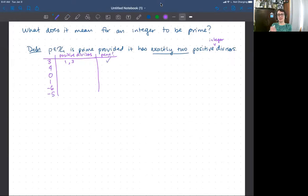What about four? The positive divisors of four are one and four, but also we can sneak in two between there. So you get two. And is that exactly two positive divisors? Nope. So four is not prime. We'll have another name for four in a moment.